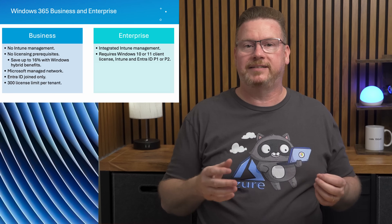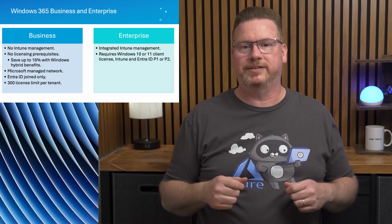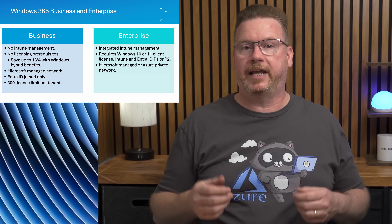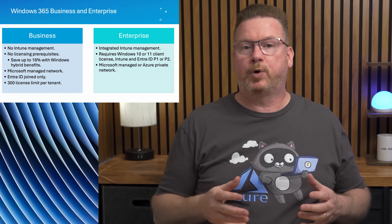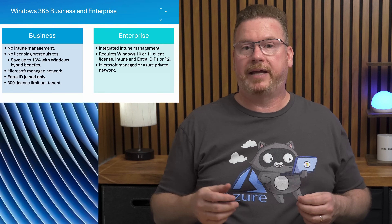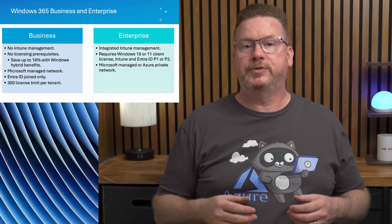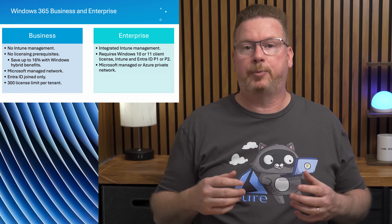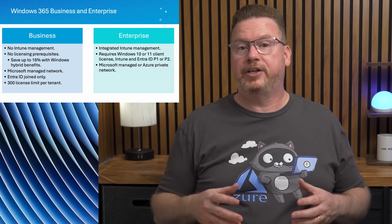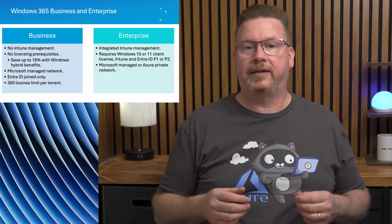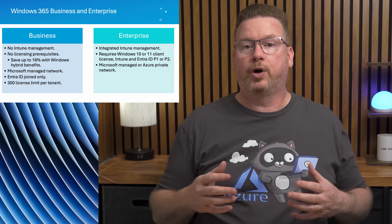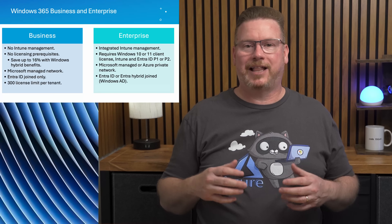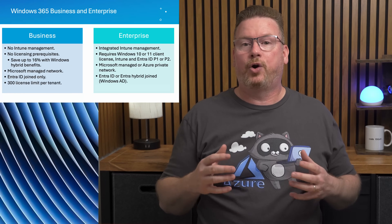Many bundles such as the Microsoft E3 or E5 come with most of the prerequisite licensing — if users have one of those, the only additional license they need is the Windows 365 Enterprise license. There's also more customization available with an Enterprise cloud PC. For network connectivity, we can use the Microsoft-managed network or use an Azure private network — a VNet in Azure that the cloud PC can connect to, allowing access to resources on the private network or internet access through a managed firewall.